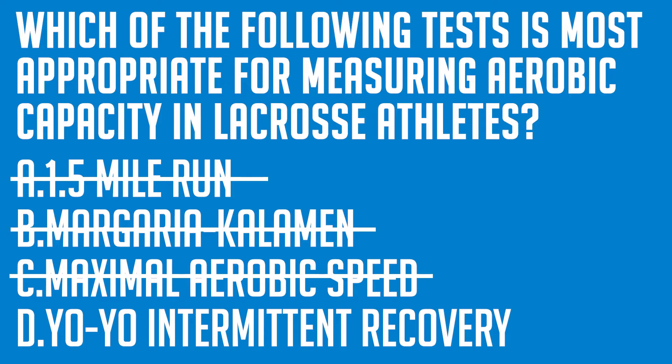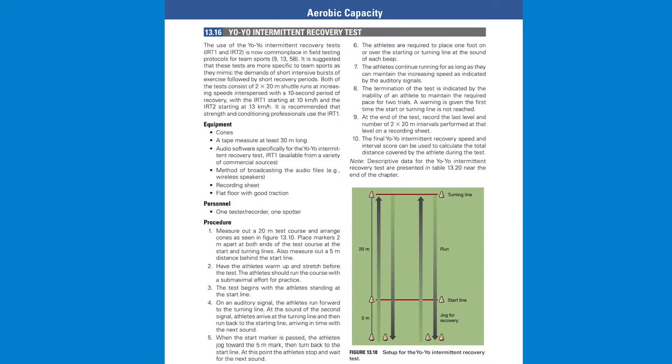The yo-yo intermittent test involves two 20 meter sprints with a 10 second rest in between. So therefore, between these options, the yo-yo intermittent recovery best represents the aerobic demands of field sports such as lacrosse and would be most appropriate test type for these athletes.